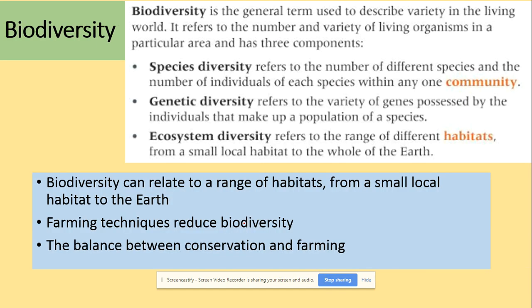So what is then biodiversity? Biodiversity could be divided further into species diversity, genetic diversity, and ecosystem diversity. Biodiversity can relate to a range of habitats from a small local habitat to the earth, and farming techniques reduce biodiversity. The balance between conservation and farming is really important to be maintained to make sure that the biodiversity is not reduced.